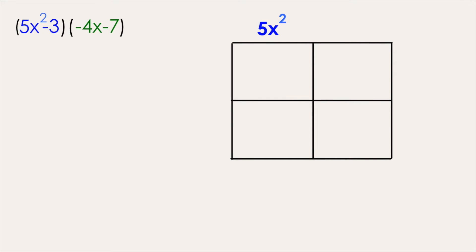Along the left side of the box, we're going to separate our second binomial, negative 4x and negative 7. Now we can start multiplying in each of the squares,